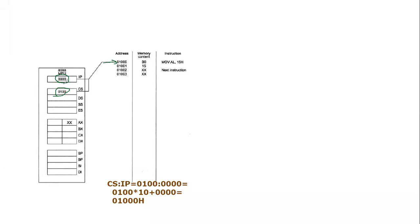Specifically, looking at address 01000h — this address is provided by the IP and CS values. Using the formula: 0100h multiplied by 10h plus 0000h gives the physical address 01000h. We can see these two bytes at address 01000h and 01001h represent the next instruction. The instruction is MOV AL, 15h — this is the assembly version and this is the machine code version of this instruction.